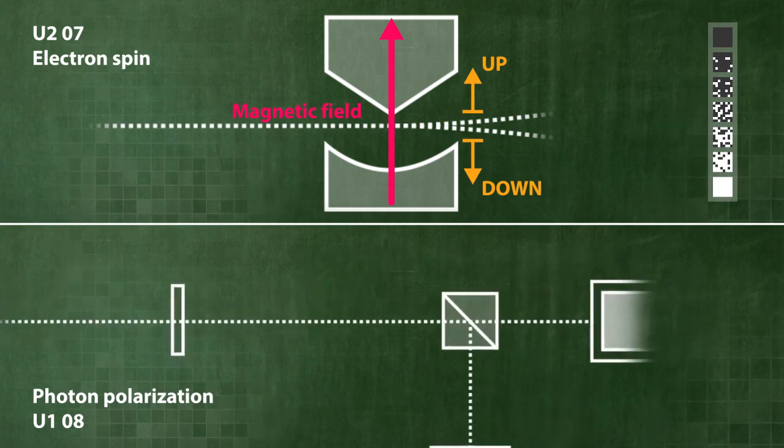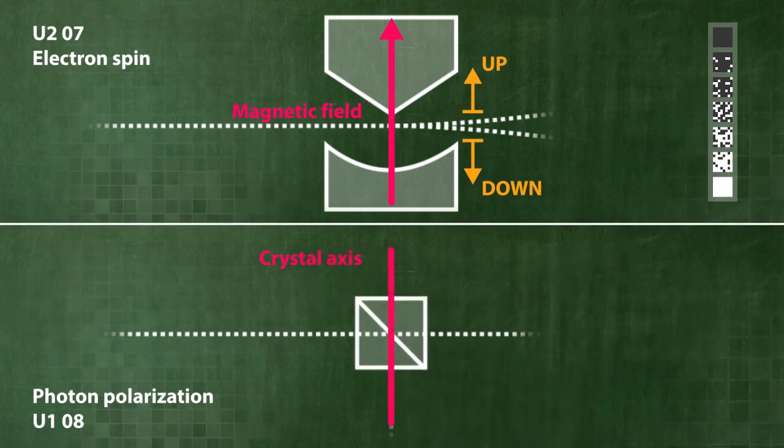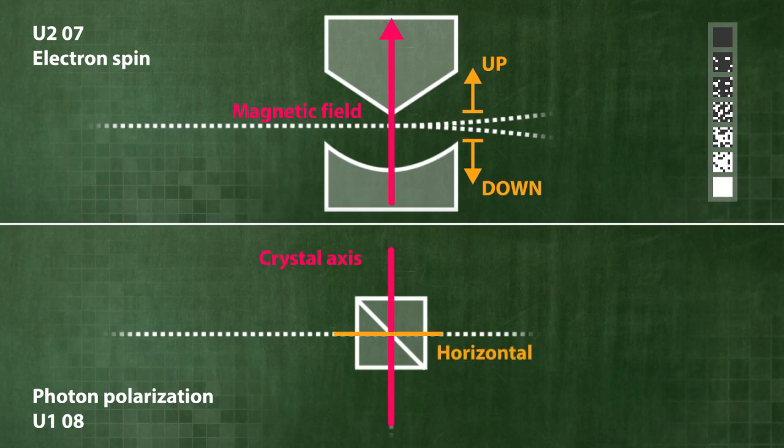Compared to the case of polarization, there is a small but important difference. The horizontal polarization only describes an axis, and unlike the spin, does not have any direction.